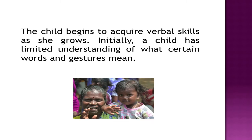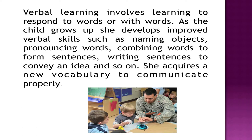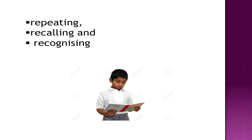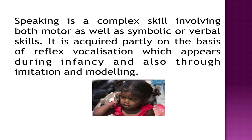The second type of learning is known as verbal learning. The child begins to acquire verbal skills as the child grows. Initially, a child has limited understanding of what certain words and gestures mean. Verbal learning involves learning to respond to words or with words. As the child grows up, the child develops improved verbal skills such as naming objects, pronouncing words, combining words to form sentences, and writing sentences to convey an idea. Verbal skills are generally acquired through memorizing by repeating, recalling, and recognizing the material. Speaking is a complex skill involving both motor as well as symbolic or verbal skills.